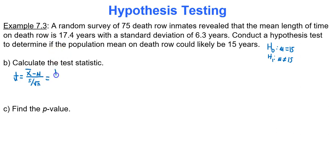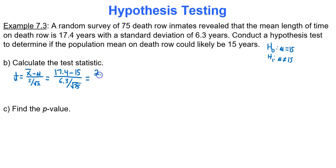X-bar is my sample mean — X-bar is 17.4. Mu is 15, the population mean value in our hypotheses. The sample standard deviation is 6.3 and the sample size n is 75, so square root of 75. The numerator gives us 2.4, and the denominator gives us 0.7275. When you divide these two values, you get a test statistic of 3.3.